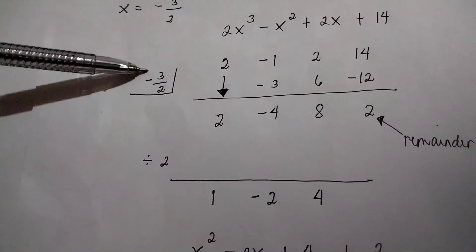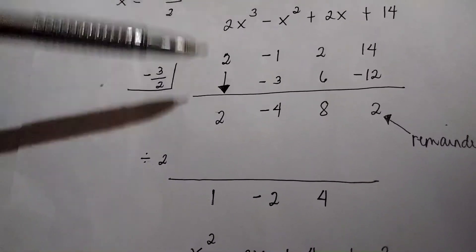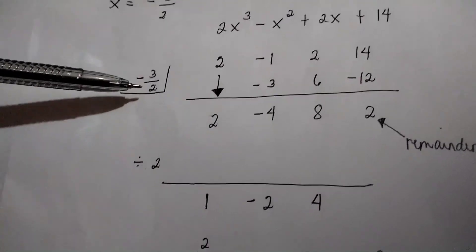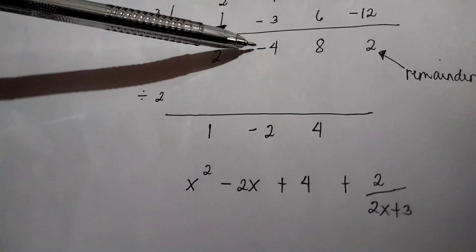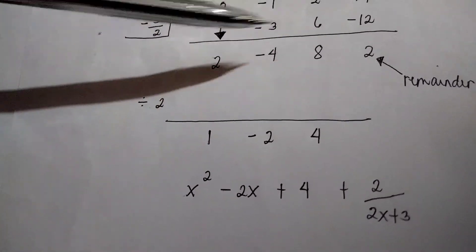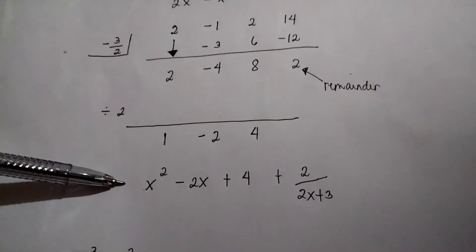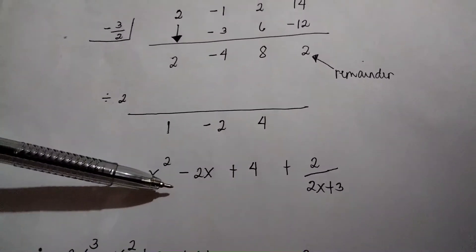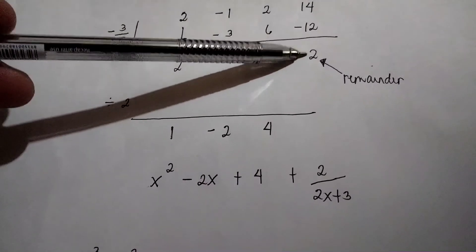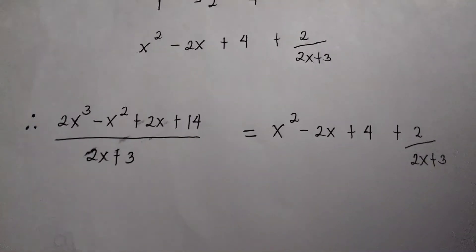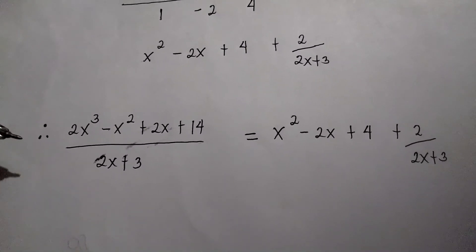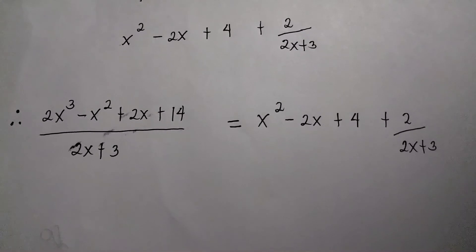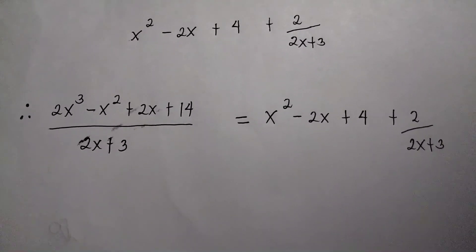Since the value of x is a fraction, negative 3 over 2, divide the coefficients — except the remainder — by the denominator, which is 2. So 2 divided by 2 is 1, negative 4 divided by 2 is negative 2, and 8 divided by 2 is 4. The degree is 3, so subtract 1. We have x squared minus 2x plus 4 plus the remainder 2 over 2x plus 3. Therefore, 2x cubed minus x squared plus 2x plus 14 divided by 2x plus 3 equals x squared minus 2x plus 4 plus 2 over 2x plus 3.